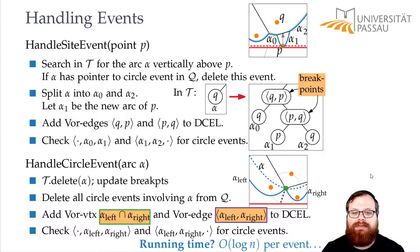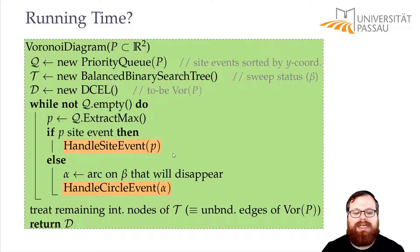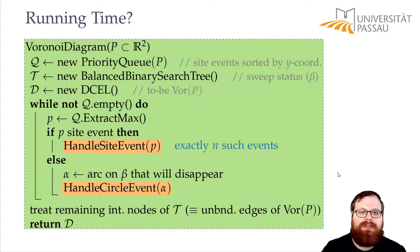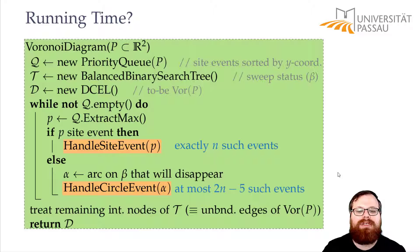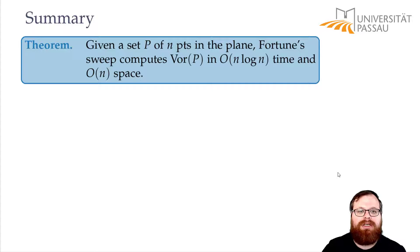But how many events do we have? So how often do we have to do logarithmic time? We do it here for the handle site event and handle circle event. Site events we do exactly once for every input site. So exactly n such events. And circle events we do exactly once for every Voronoi vertex. So we have at most 2n-5 such events, as we proved earlier. So the total running time is order of n log n. And that's the main result of this lecture.